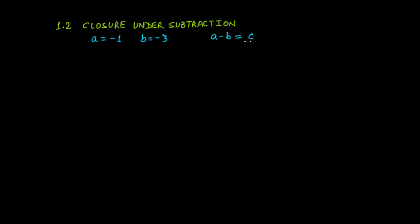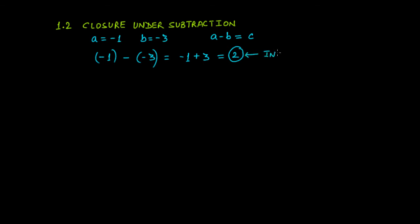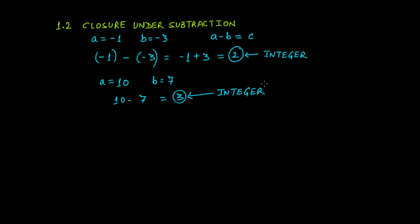If a - b gives a number c that is also an integer, then we'll say that subtraction is closed. So: -1 - (-3) = -1 + 3 = 2, and 2 is an integer. Let's also check two positive integers: a = 10, b = 7. Then 10 - 7 = 3, and 3 is an integer.